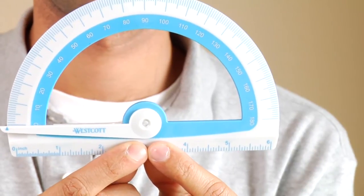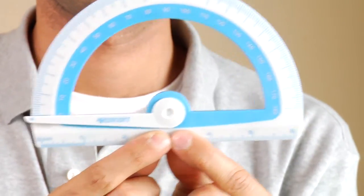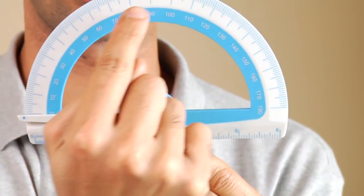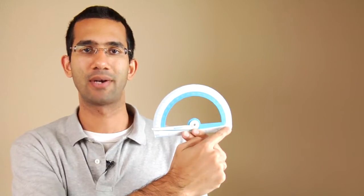This is what the protractor looks like and over here we can see all the angle degree measures from 0 up to 180 degrees.